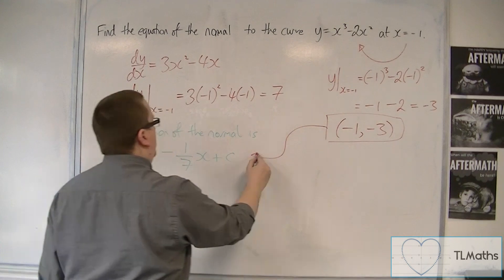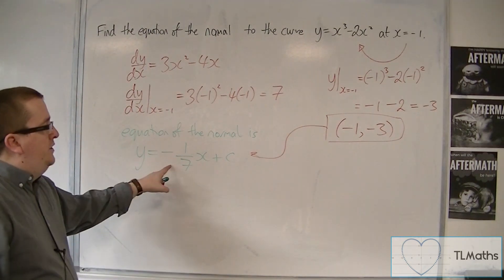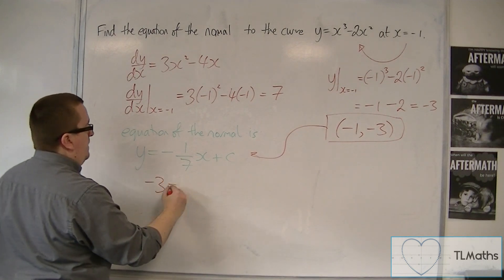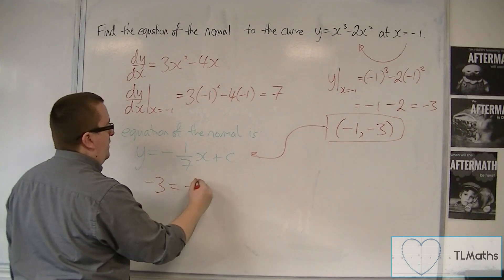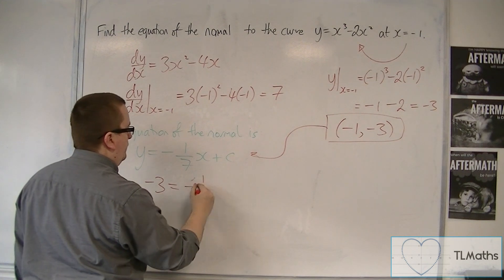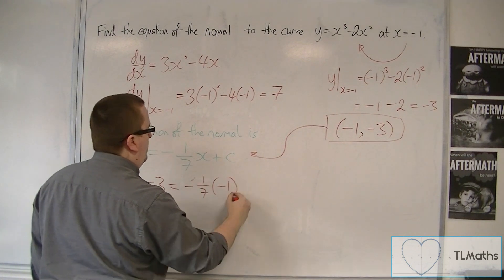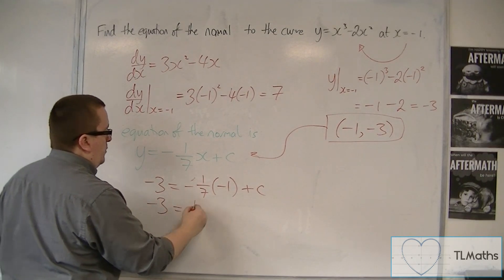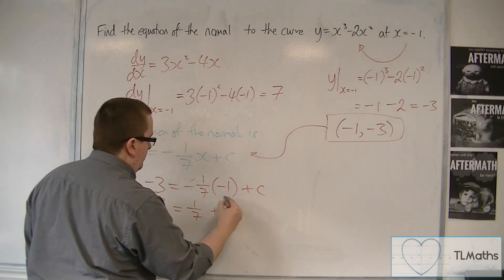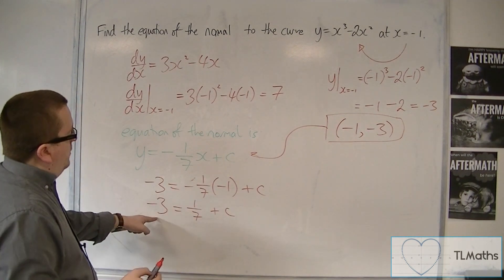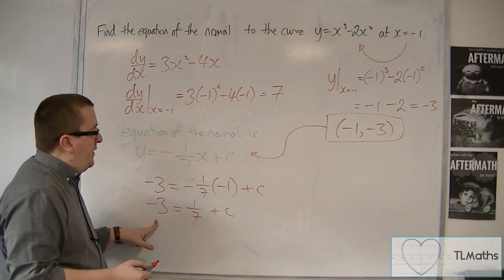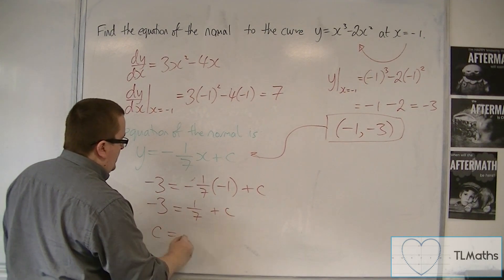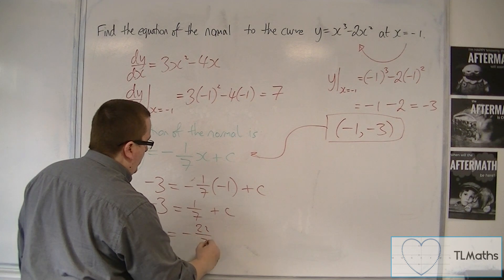And it's these that I will substitute into the equation of the normal to find c. So minus 3 is equal to minus 1/7th times minus 1 plus c. So I have minus 3 is equal to 1/7th plus c. Now 3 is 21/7ths, so minus 21/7ths take away another 7th is c is equal to minus 22/7ths.